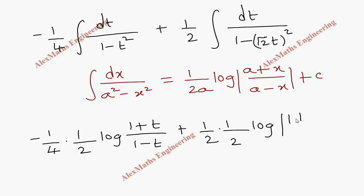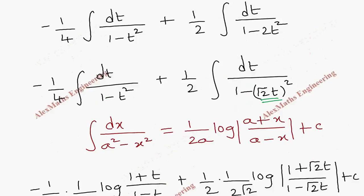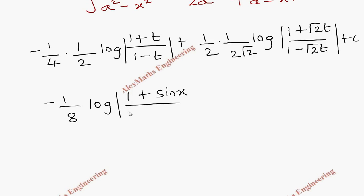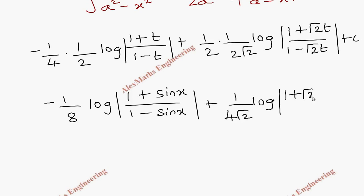For the second term, x = √2·t and a = 1, so 1/(2a) = 1/2. Since there is a coefficient √2 on t, we divide by √2 outside. This gives (1/2)·(1/(2·√2))·log|(1 + √2·t)/(1 - √2·t)|, which equals (1/4√2)·log|(1 + √2·t)/(1 - √2·t)|. Finally, replacing t = sin(x), the answer is: (-1/8)·log|(1 + sin x)/(1 - sin x)| + (1/(4√2))·log|(1 + √2·sin x)/(1 - √2·sin x)| + C.